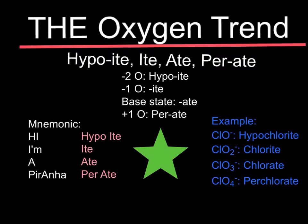The next thing you can remember for polyatomic ions is the device 'HI I'm a piranha.' This one probably sounds even weirder, but trust me it works. This helps you remember the order for naming when you change the number of oxygens in a polyatomic ion. If you can remember the capital letters, you have everything you need. HI means hypo-ite, so for example hypochlorite is chlorine with the lowest amount of oxygens — one. Then as you move through 'HI I'm a piranha' you just add oxygens, going from hypo-ite to -ite to -ate to per-ate.